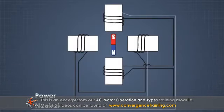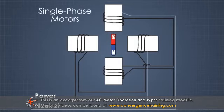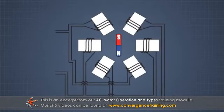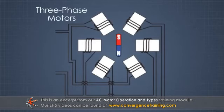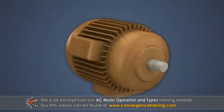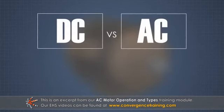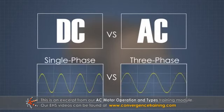Low power applications can be satisfied with single phase motors, whereas higher power applications, or applications where the size or weight of the motor is important, may require a three-phase motor. Before describing how an AC motor works, we must first understand the difference between direct and alternating current and between single and three-phase power.